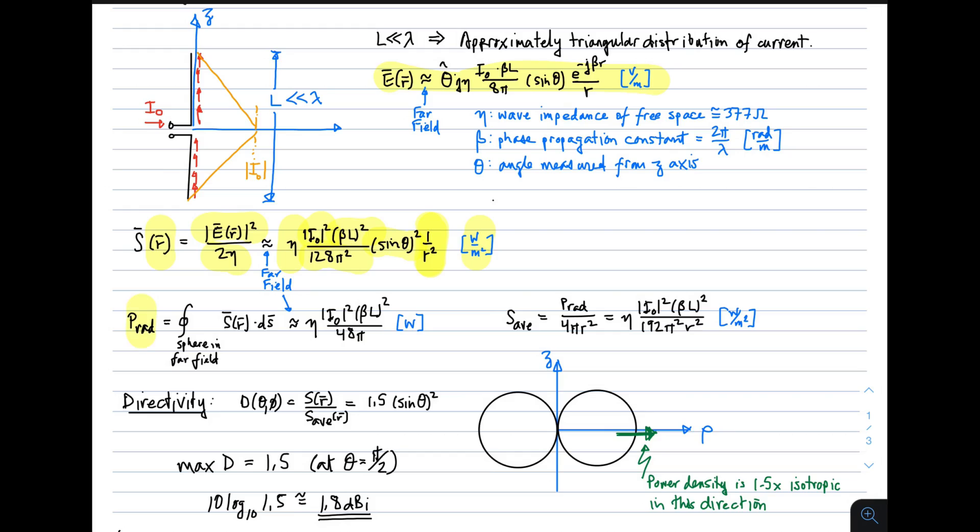We also want to know the radiated power. This will become important when we want to compute the impedance. The way we do that is we take the spatial power density. We integrate over a sphere in the far field. So if we take watts per meter squared and integrate over an area, we get watts. That's the radiated power.